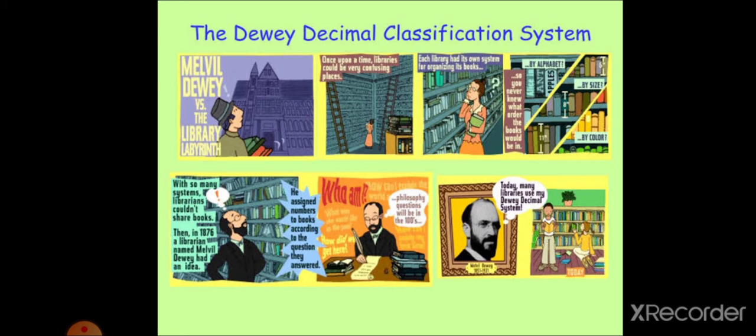Then, in 1876, a librarian named Melville Dewey had an idea. He assigned numbers to books according to the question they answered. For example, he assigned 100 to the philosophy and today, all the libraries in the world, most of the libraries in the world are using Dewey Decimal Classification System for arranging books in their particular library.